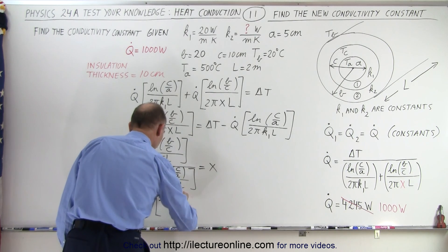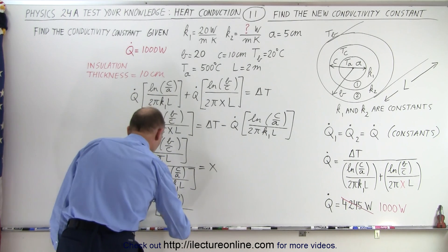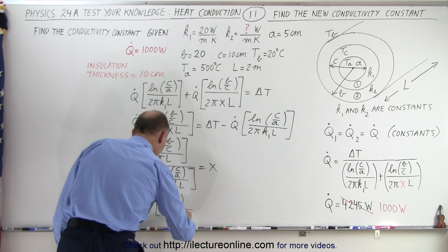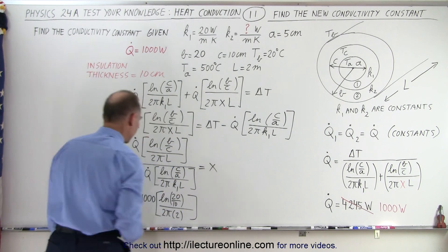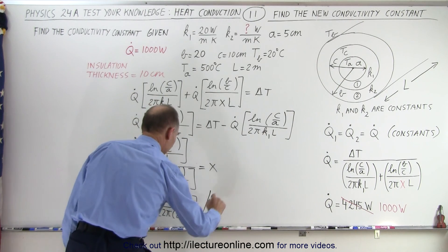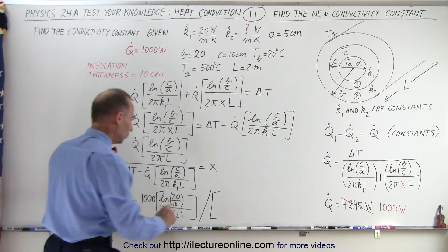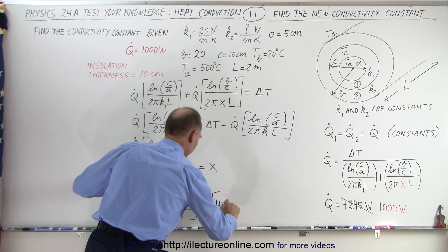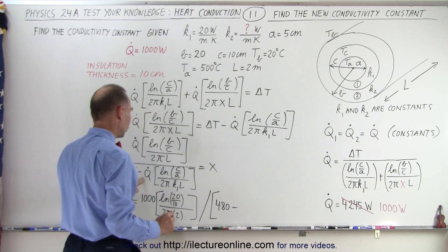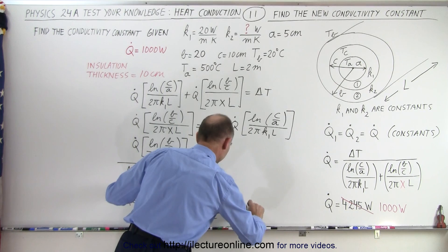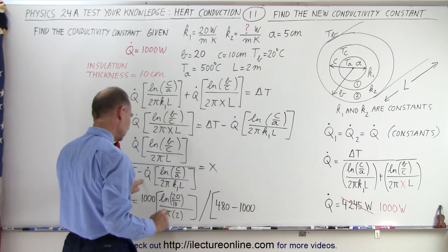This divided by 2 pi times the length, all that divided by, that's the only way I can fit it in, the delta T, which is 480, minus the Q dot, which is 1,000. Did I forget? No, I have the Q dot there.